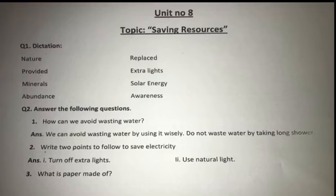Second point: use natural light. Natural light yaani suraj ki roshni — din ke waqt suraj ki roshni hamare liye kaafi hoti hai. Is liye hume din ke waqt kam lights istamal karni chahiye. Jahan zaroorat nahi, wahan lights off rakhni chahiye aur natural light use karni chahiye. Is tarah hum electricity save kar sakte hain.